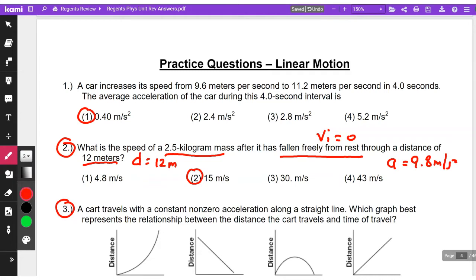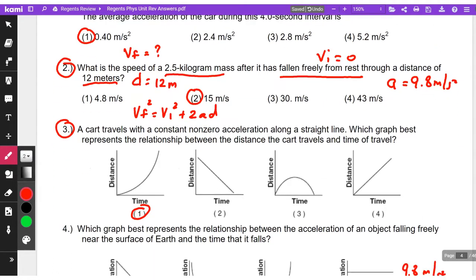And now you have everything you need because don't forget too that you're looking for a speed. So you always write down what you're looking for and what they gave you. So that's one, two, three, four: VF, VI, D, and A. So we use VF squared equals VI squared plus 2AD. I made a classic mistake. I didn't square. And there you go. You can work out the math.